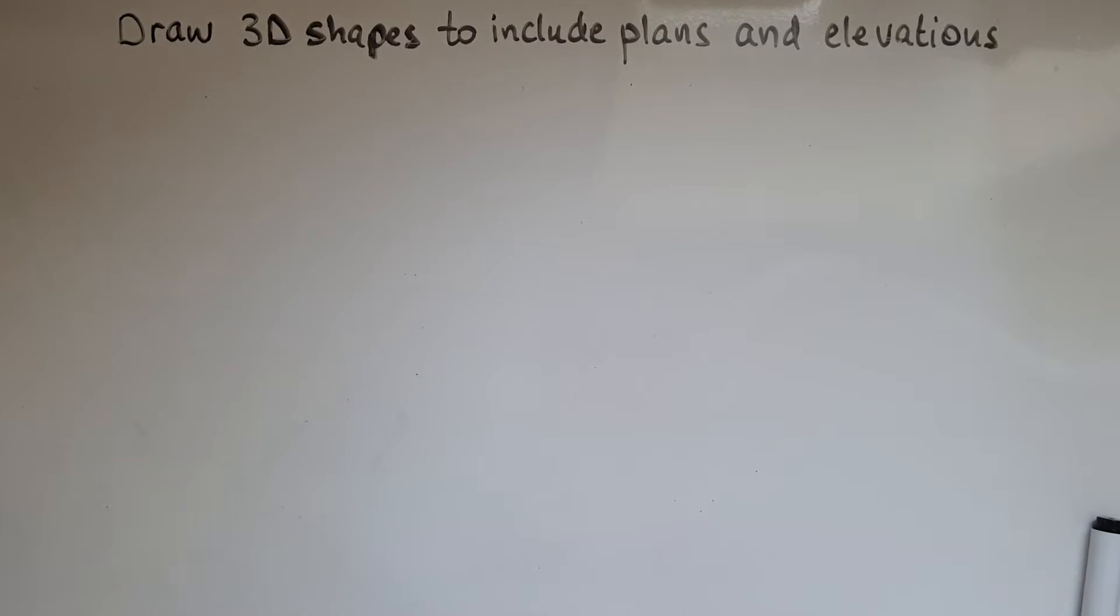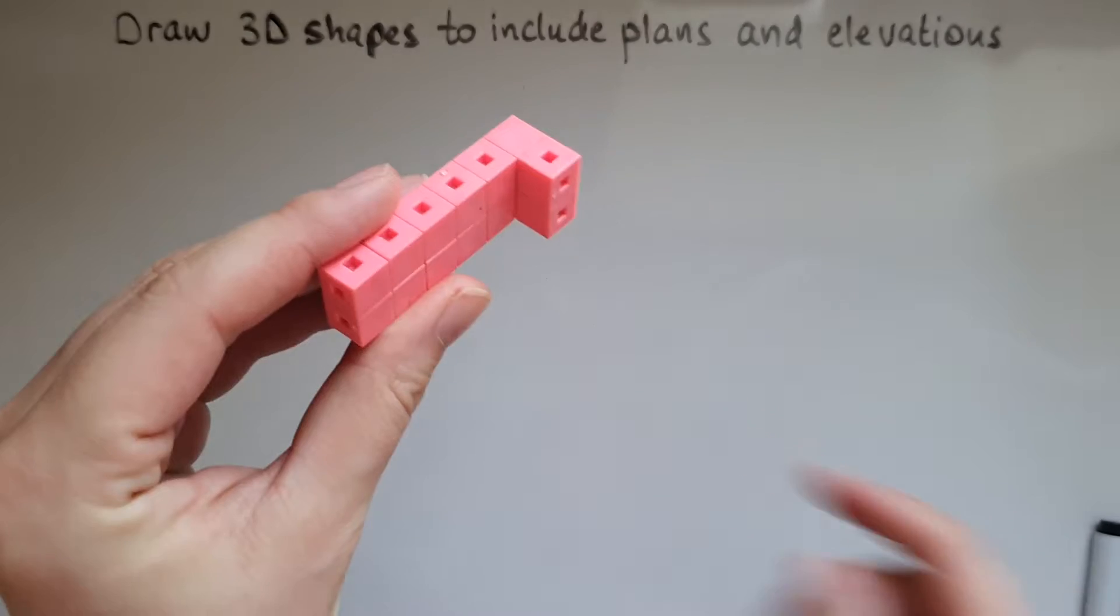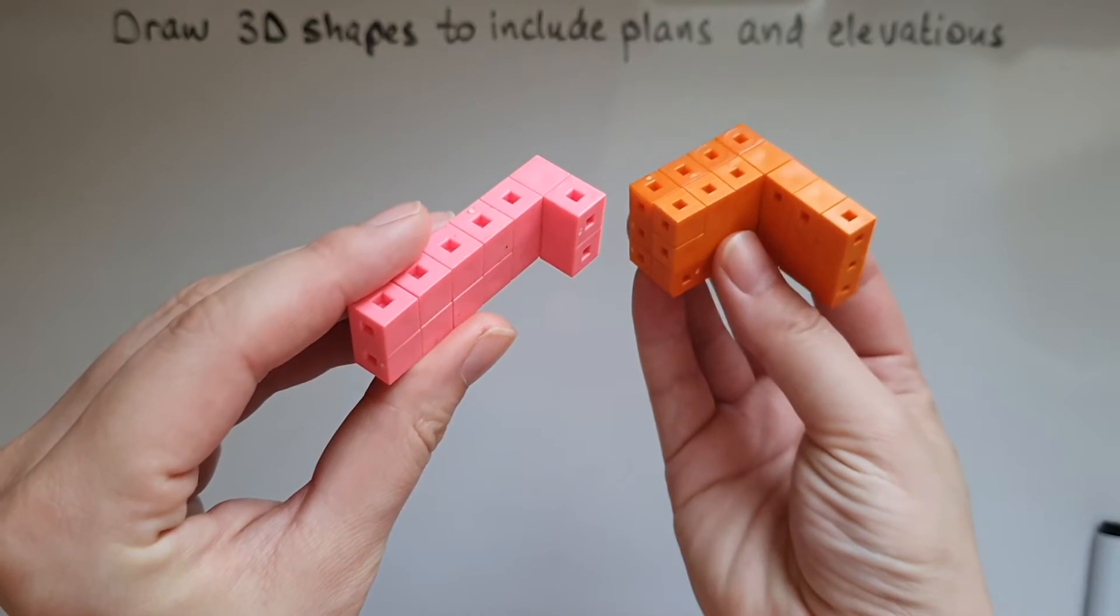In this video we learn to draw 3D shapes to include plans and elevations. In another video at level one I've looked at plans and elevations of simple 3D shapes. Now in this video I look at two compound shapes made using two cuboids.